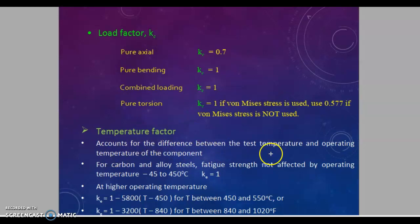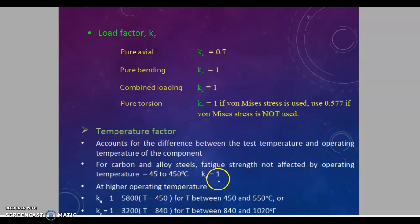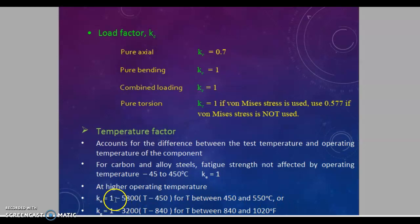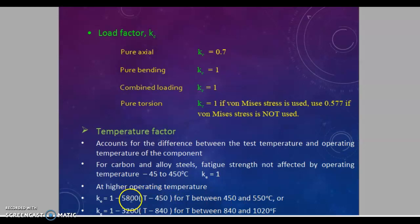The temperature factor accounts for the difference between the test temperature and operating temperature. For carbon and alloy steels, strength is not affected by operating temperature in the range of minus 45 to 450 degrees Celsius, where the temperature factor ke is equal to 1. At higher operating temperatures, for temperatures between 450 to 550 degrees Celsius, ke equals 1 minus 5800 times (t minus 450).